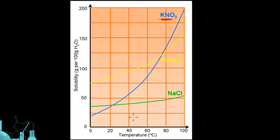The first thing to notice is that the x-axis shows temperature — here's our changing temperature. Solubility is displayed on the y-axis, and you'll note that it says per 100 grams of water. So this is the solubility for these salts in 100 grams — our specified amount — of water.